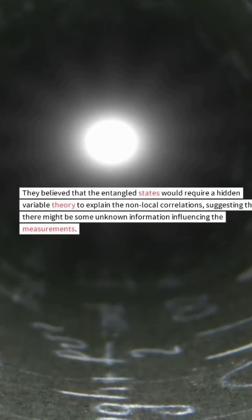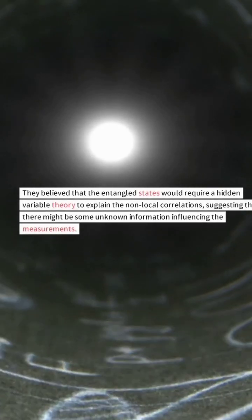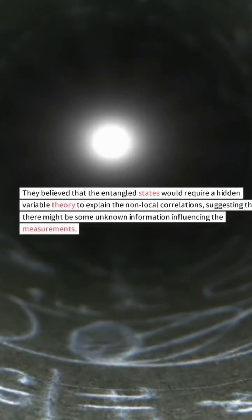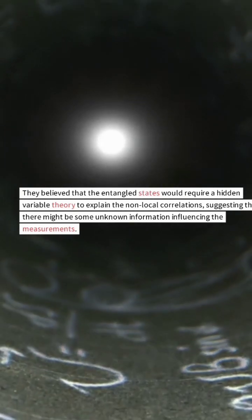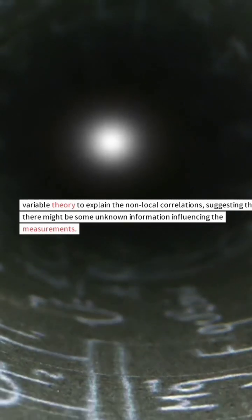They believed that the entangled states would require a hidden variable theory to explain the non-local correlations, suggesting that there might be some unknown information influencing the measurement.